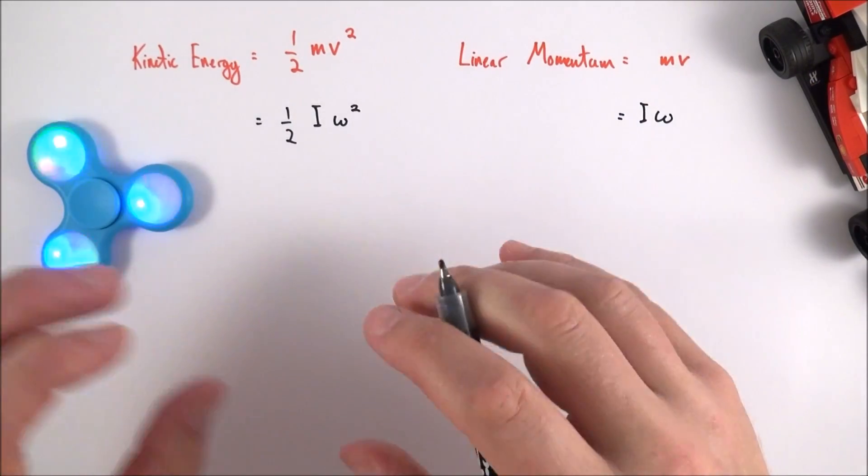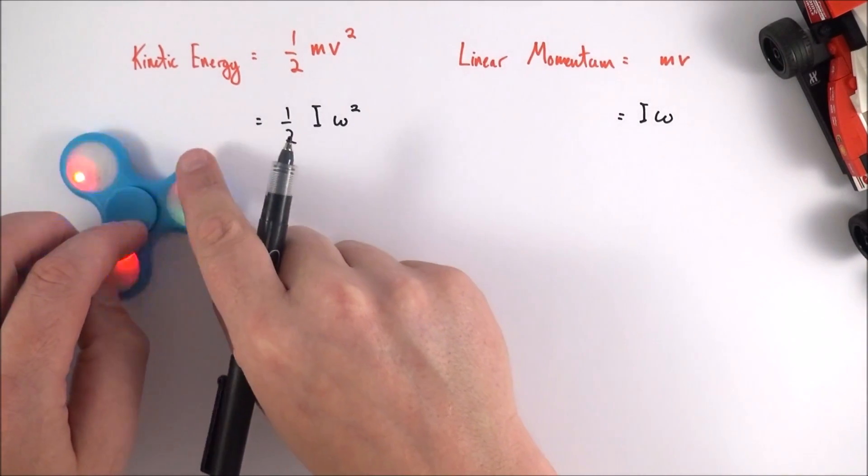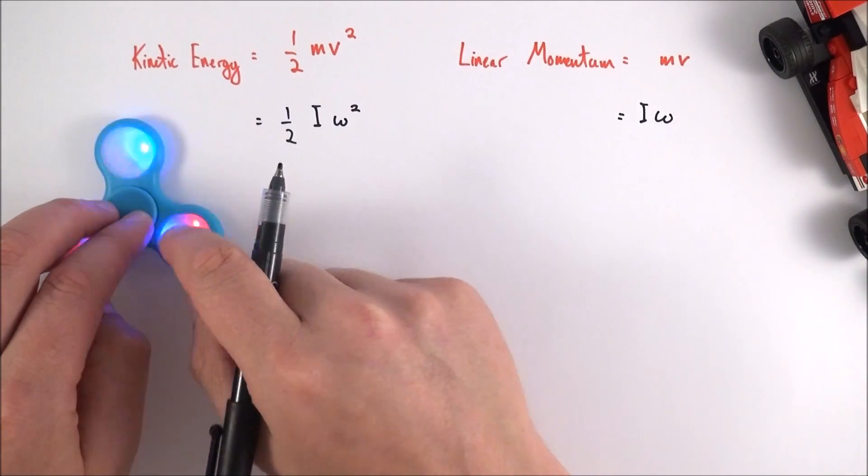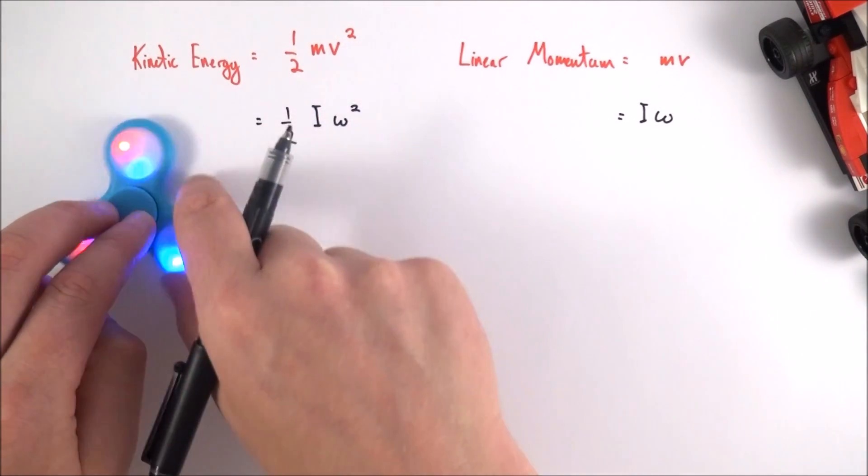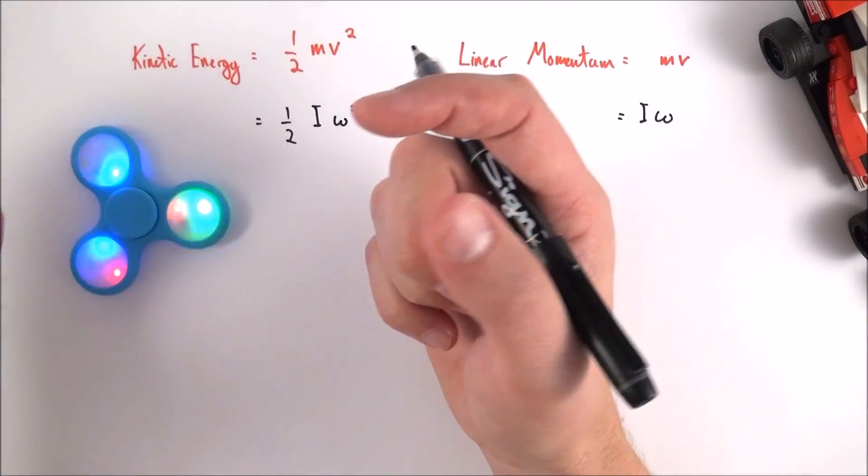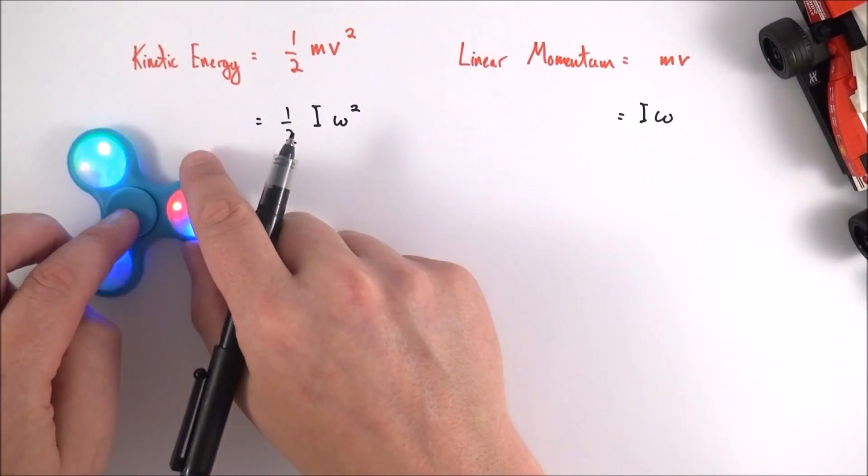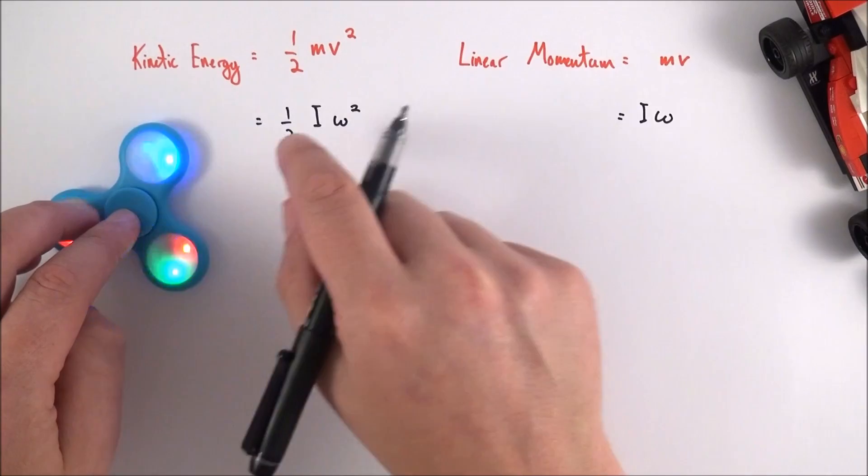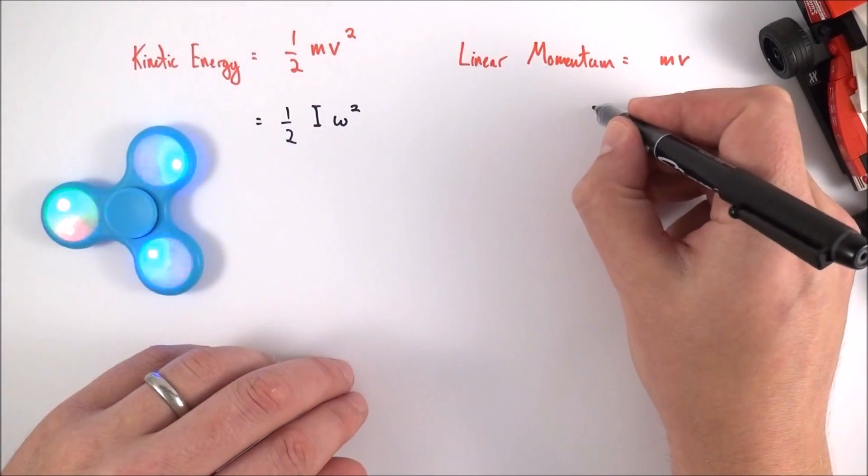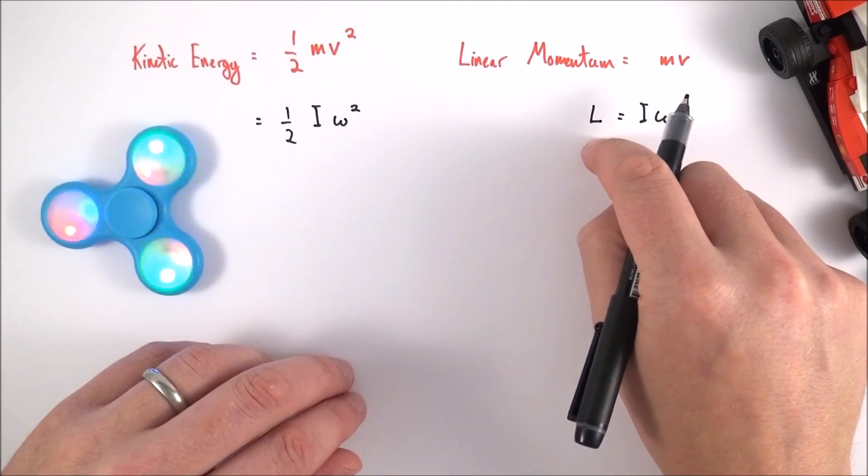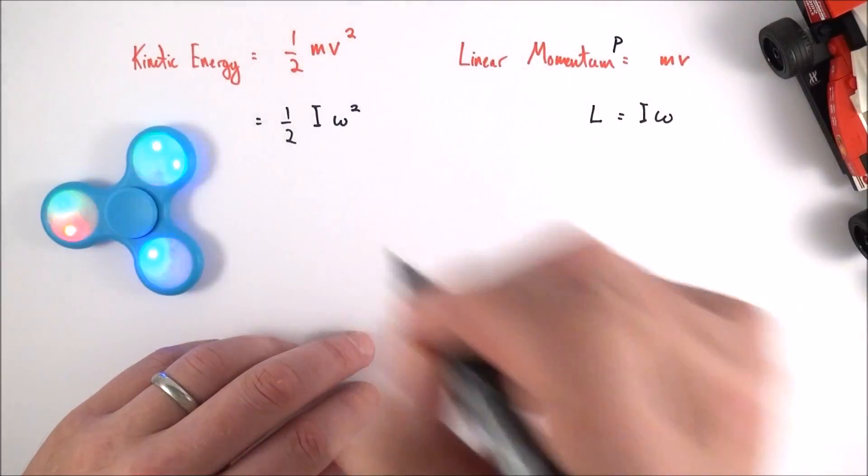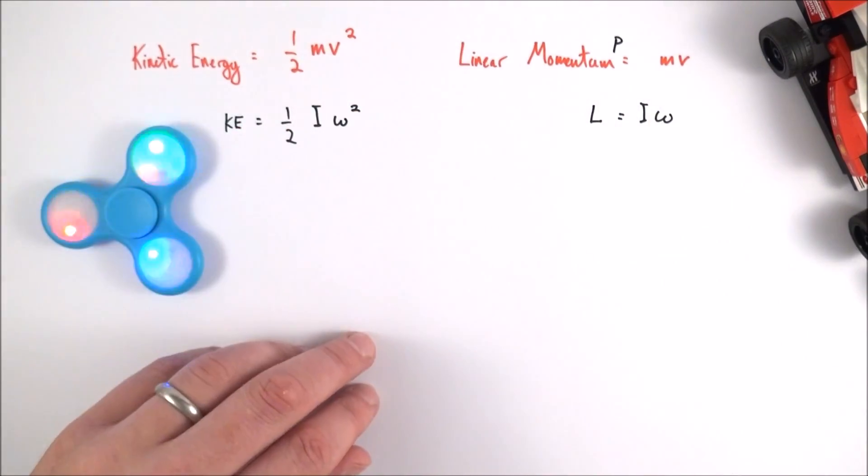So what is I and omega? Well omega is the angular velocity, this is how many radians which is the angle it goes through per second. So effectively if you want to make this fidget spinner last longer you need to spin it quicker. Pretty obvious. So the faster you spin it the greater the kinetic energy and the greater its angular momentum. And we use the symbol L for angular momentum whereas linear momentum has a symbol P.